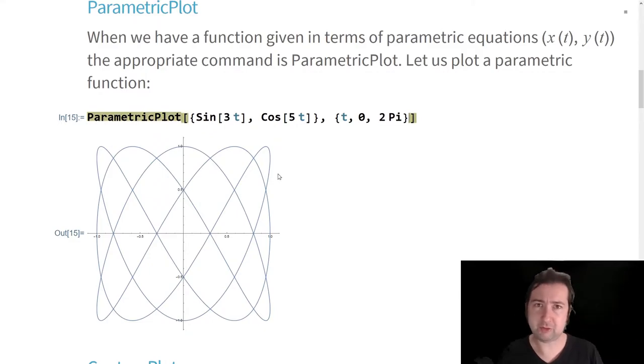Of course, you could do things with parametric plot that you could never do with plot because plot assumes a function. Parametric plot assumes a curve that's being traced out in R2. And so you can get things like these knotting patterns.